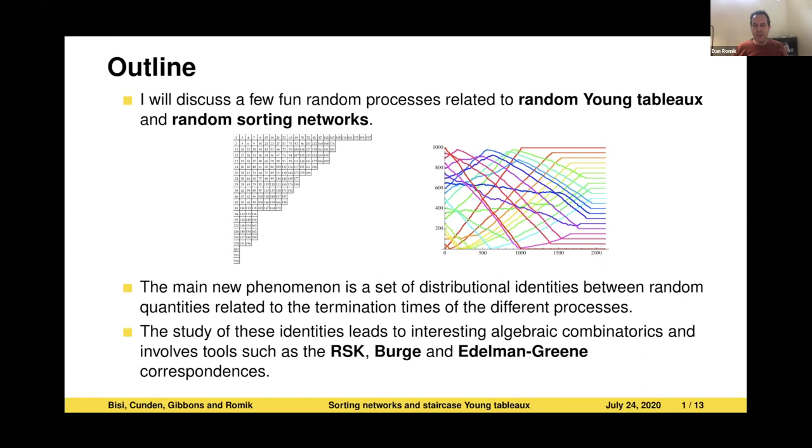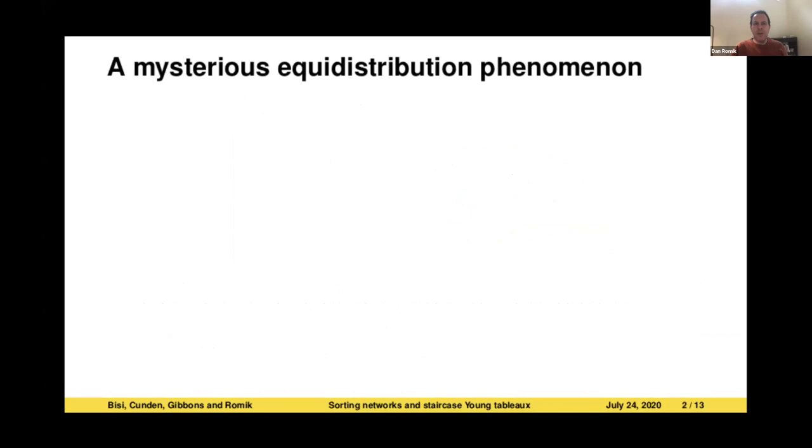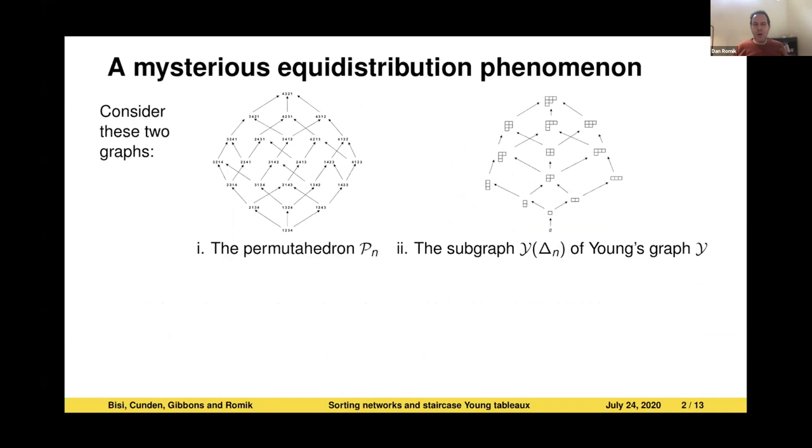These random quantities are related to the time when these processes terminate. The connection to combinatorics shows up when you study these identities and they tend to lead to very interesting algebraic combinatorial constructions and tools, including ones that we all know and love, such as the RSK correspondence, the Burge correspondence, and the Edelman-Green correspondence. They all have a role to play in this discussion.